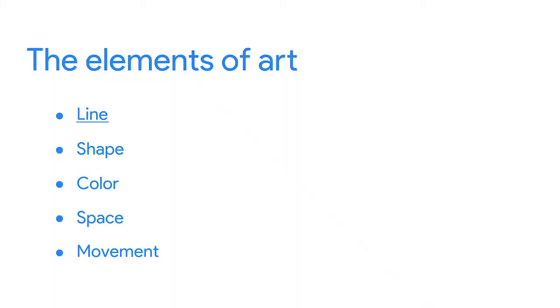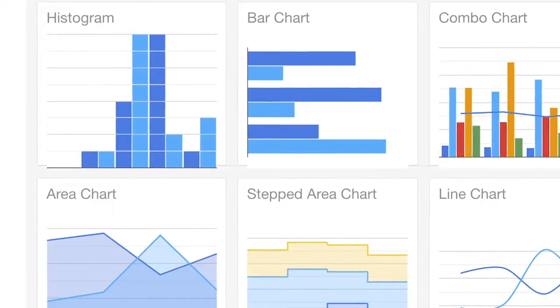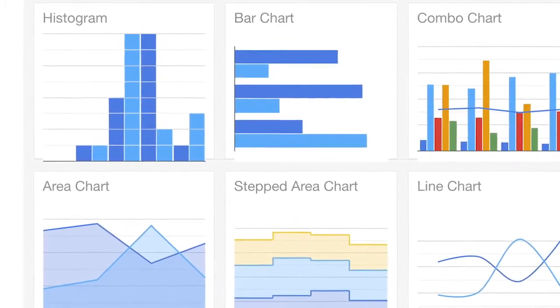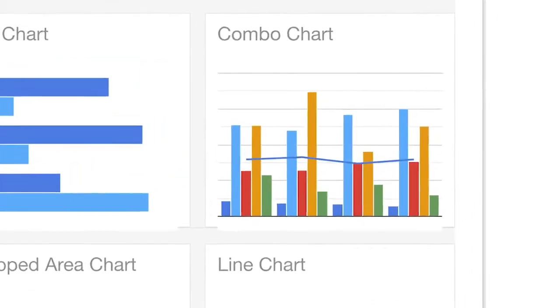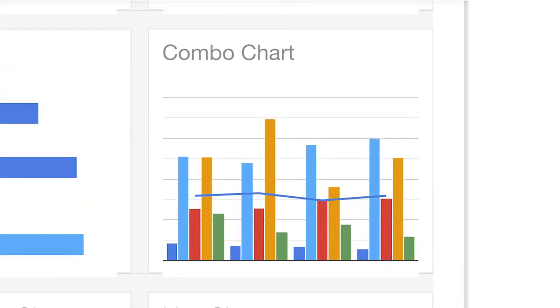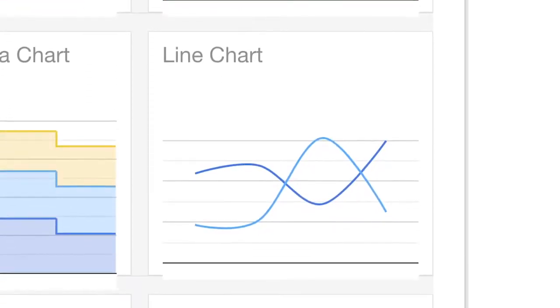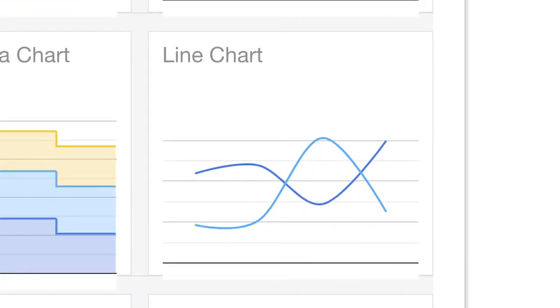Lines in visualizations can be curved or straight, thick or thin, vertical, horizontal, or diagonal. They can add visual form to your data and help build the structure for your visualization. These charts show some of the variety that lines can bring to your data viz. The combo chart shows two different types of lines, both providing a graphic for the data. The line chart does the same, but uses curved lines instead.